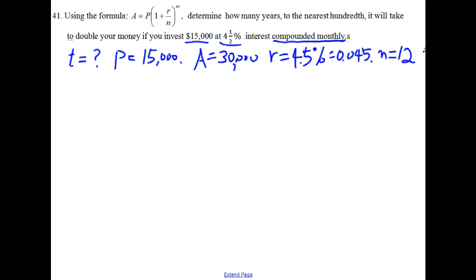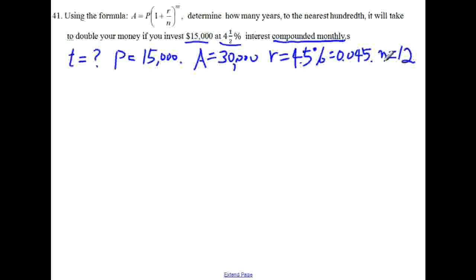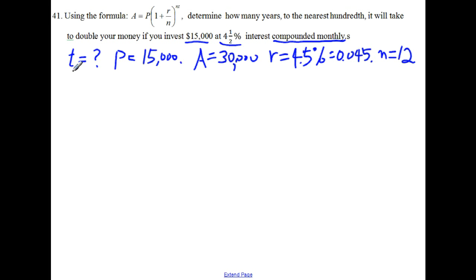So we have the quantity, we have the values for these variables, P, A, R, and N, and so t is the variable for the unknown quantity.